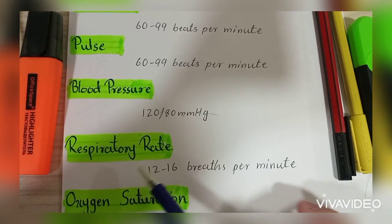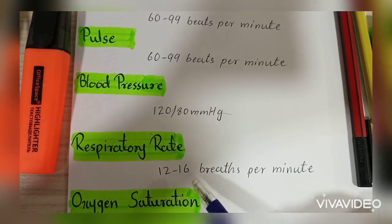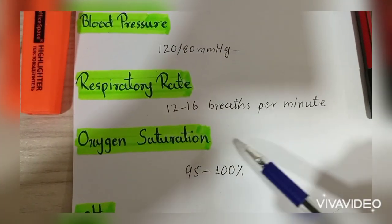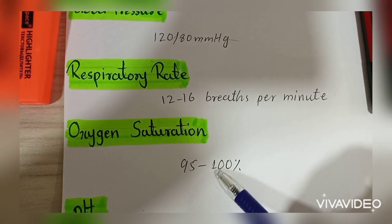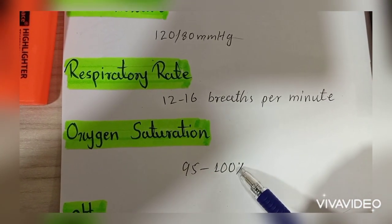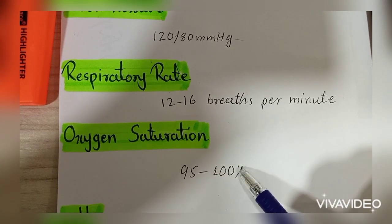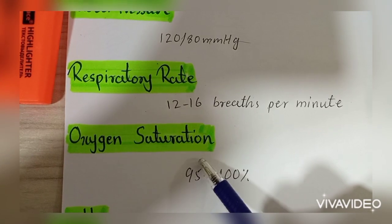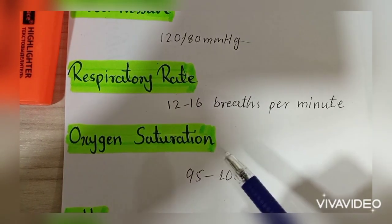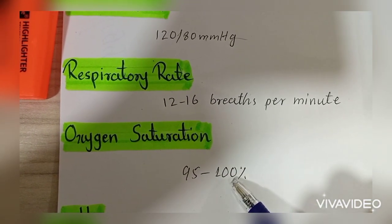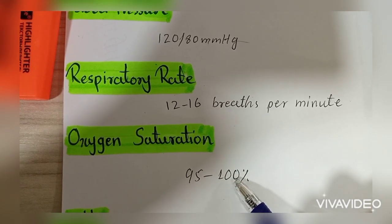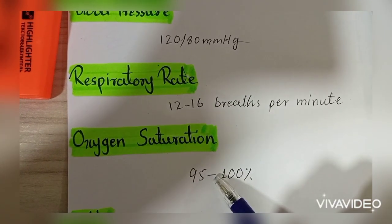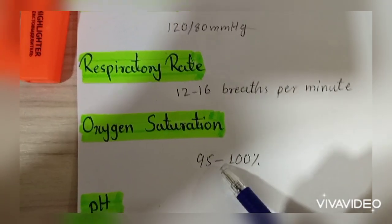Next comes respiratory rate — it is 12 to 16 breaths per minute normal. Then oxygen saturation, this is 95 to 100 percent. Oxygen saturation means the quantity in which the blood is receiving oxygen. 100 is the maximum limit and 95 is a little bit lower. It is also checked by the pulse or oximeter.